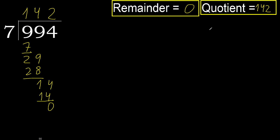The remainder is 0. Therefore, 994 divided by 7 is 142. Thank you.